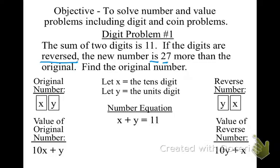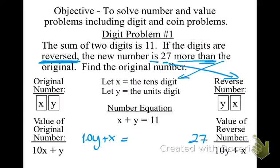Reverse is 27 more than the original. So what do I write for reverse? 10y plus x. Reverse is 27. Is my equals. Now be careful. It says 27, then there's a more than. What did I tell you about than? You switch. This goes here, and the other one that's on that side goes there. So that 27 is coming over here. And what is the original value? It would be 10x plus y. So those are your two statements.